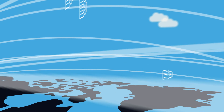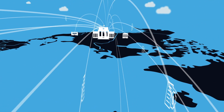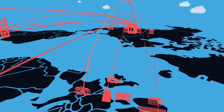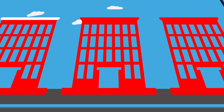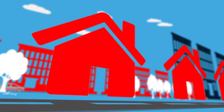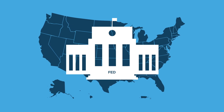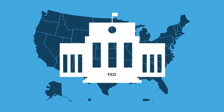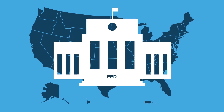In today's global economy, bank funding markets extend across borders, and developments in any one area can have a far-reaching impact. When these funding markets break down, the provision of credit to businesses and households in the United States and other countries can be disrupted. As our nation's central bank, it's the Federal Reserve's responsibility to do what it can to support the functioning of U.S. dollar funding markets, both at home and abroad, to shield the U.S. economy from financial strain.